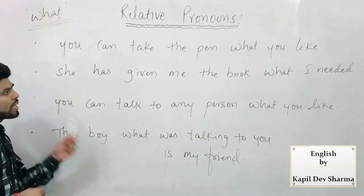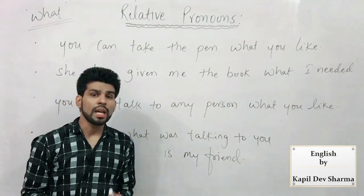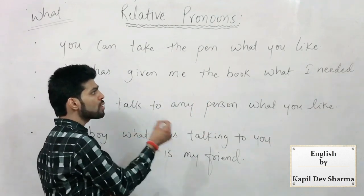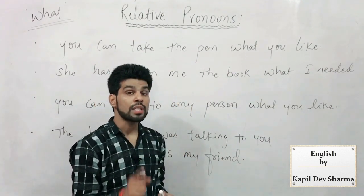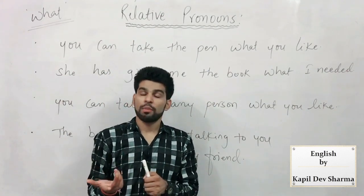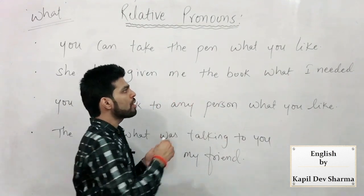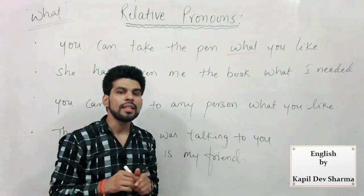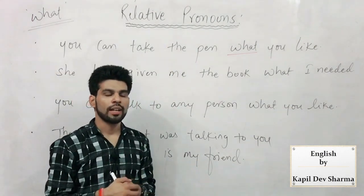Let's look at examples. First: 'You can take the pen — what you like.' Aap woh pen le jaa sakte hain. What ek aisa relative pronoun hai jiske paas antecedent nahi hota — yahaan aapne antecedent de diya hai na? Kya aap chahein — joh pen acha lage aap le jaa sakte hain. 'You can take the pen — what you like' — that must be incorrect, because what ke paas kabhi bhi antecedent nahi hota.